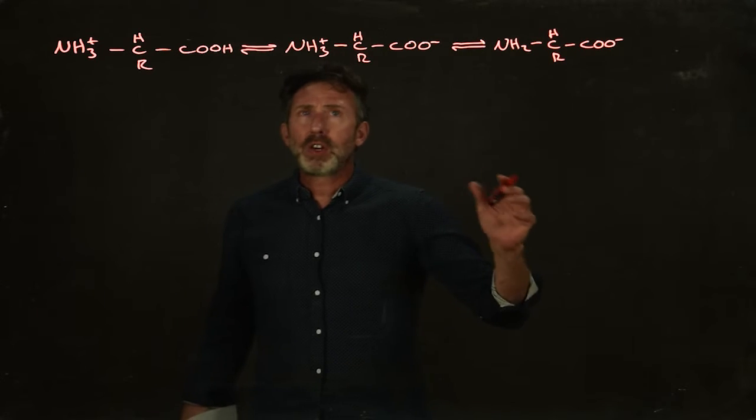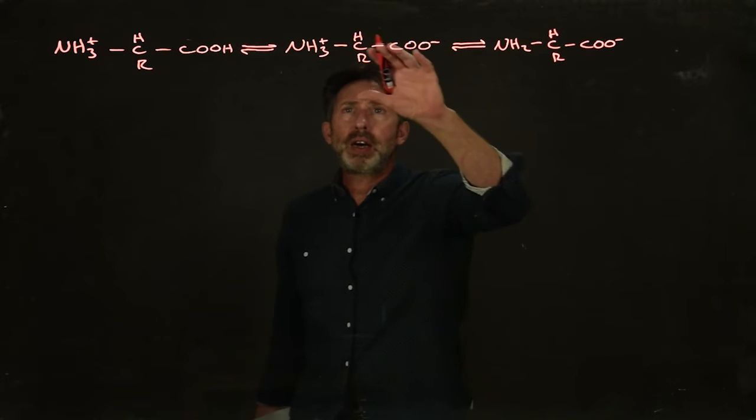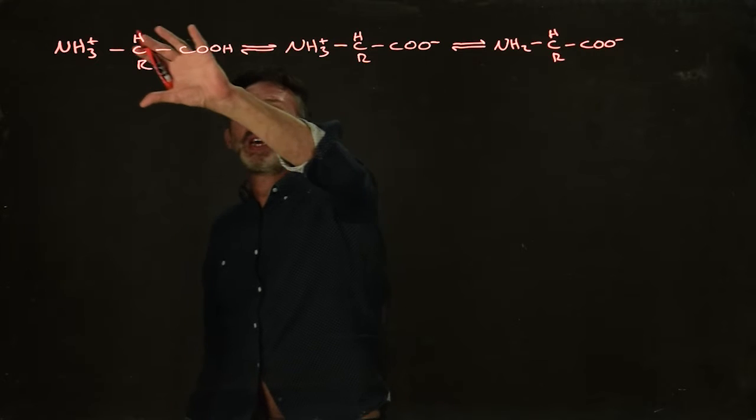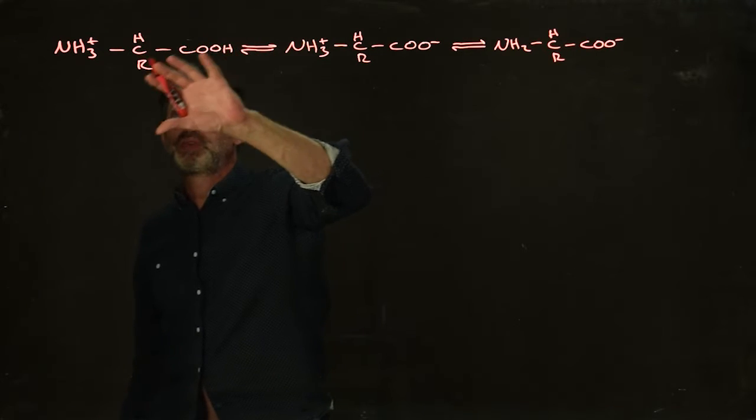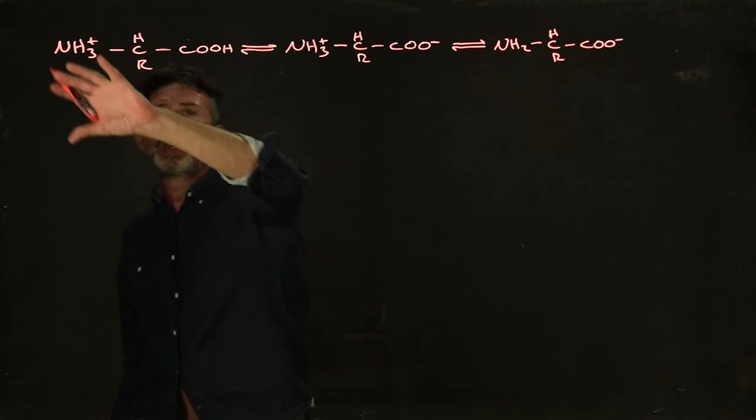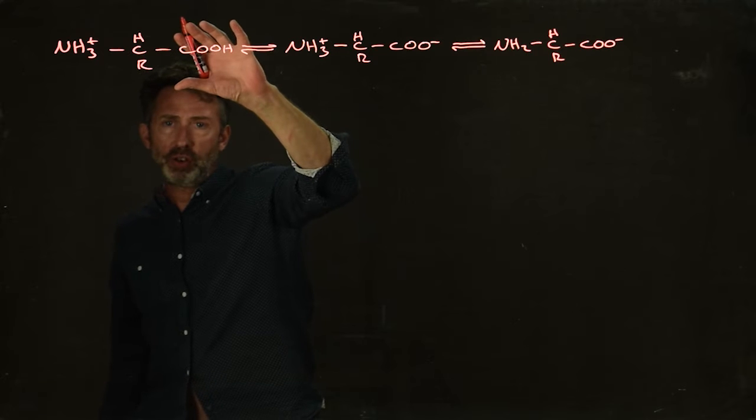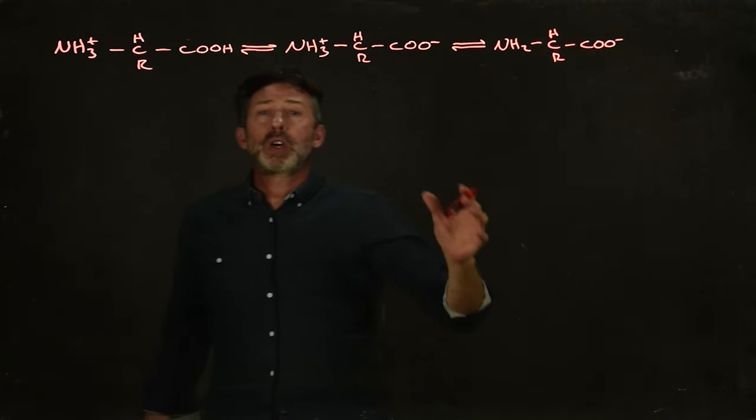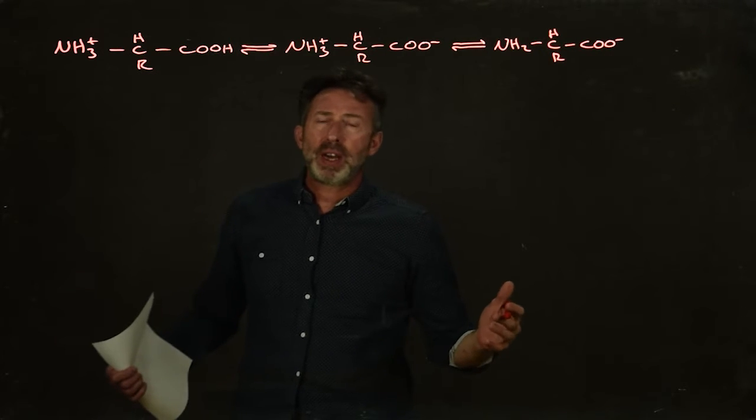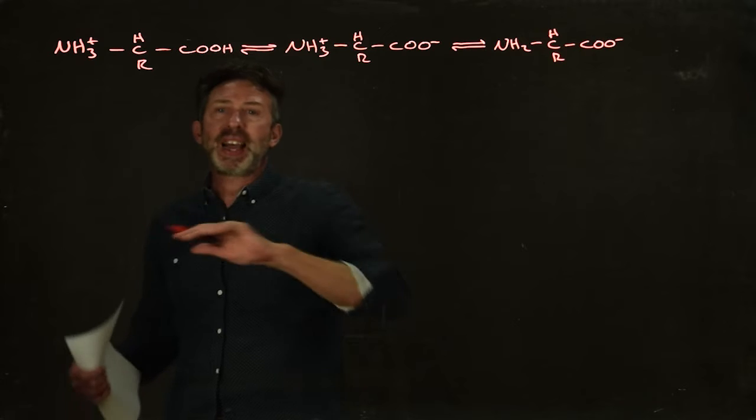I've got a generic amino acid here, and in this form it's in the fully protonated form. We've got the amino group protonated and the carboxylic acid group protonated. For the moment we're going to assume it's a simple amino acid where the side group, the R group, cannot ionize.